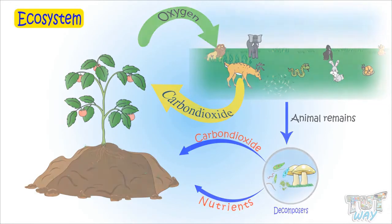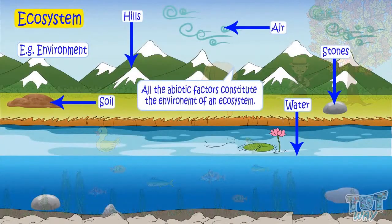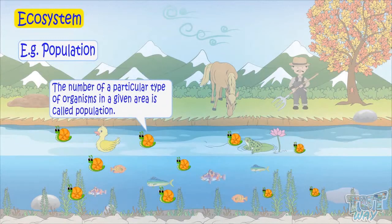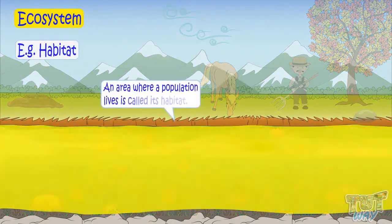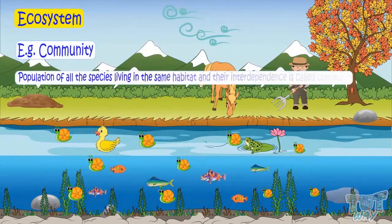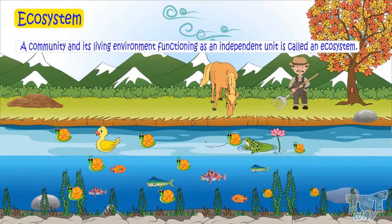Now let's learn some more terms of ecosystem. Environment: All the abiotic factors constitute the environment of an ecosystem. Population: The number of particular types of organisms in a given area is called population. Habitat: An area where a population lives is called its habitat. Community: Populations of all the living things living in the same habitat and their interdependence is called community. Ecosystem: A community and its living environment functioning as an independent unit is called an ecosystem.